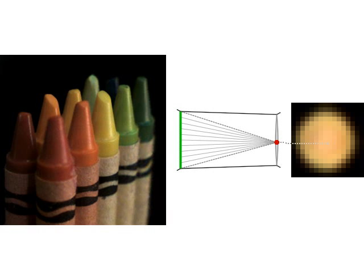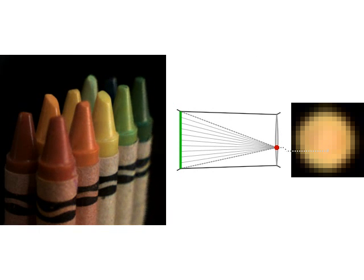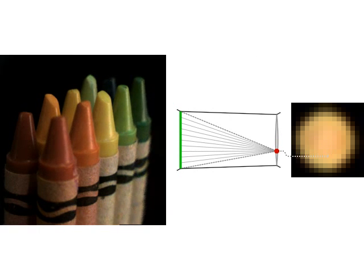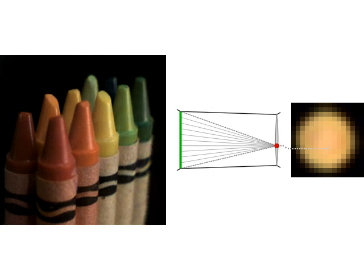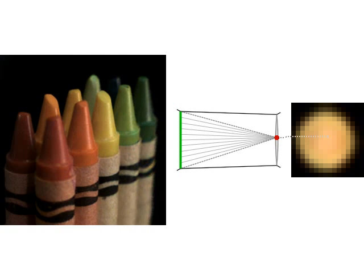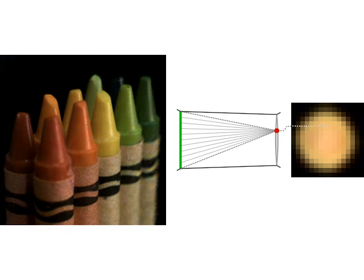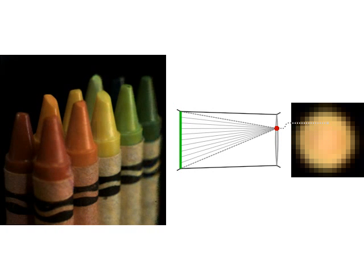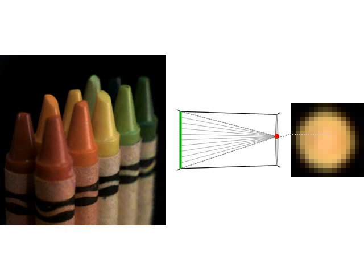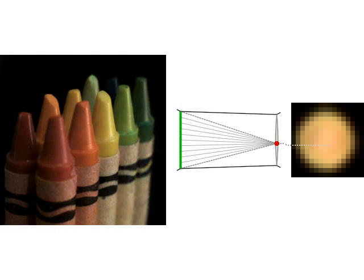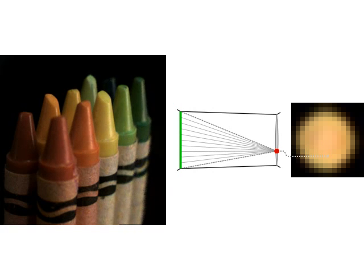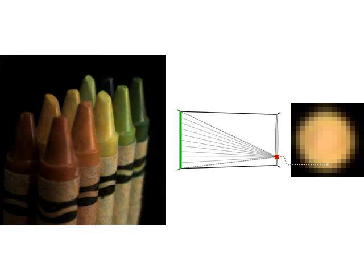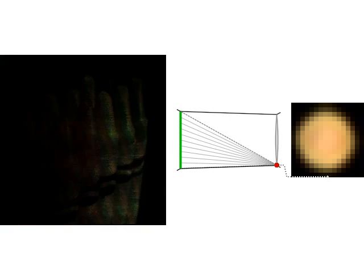Choosing a different pixel from each microlens image, we can move the observer laterally across the original camera aperture. Of course, if we move too far, we will eventually reach the edge of the microlens image — the view will vignette and eventually disappear.